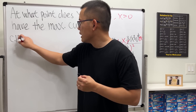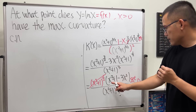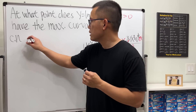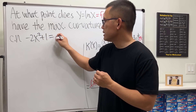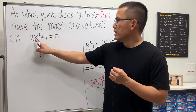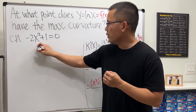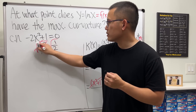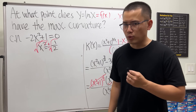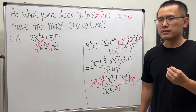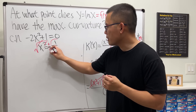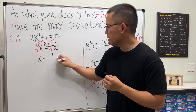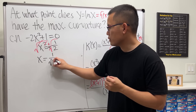The critical number happens when the bracket equals zero: negative 2x² + 1 = 0. Moving terms: 2x² = 1, so x² = 1/2. Taking the square root: technically ±, but since x > 0 from our domain restriction, the only critical number is x = 1/√2.